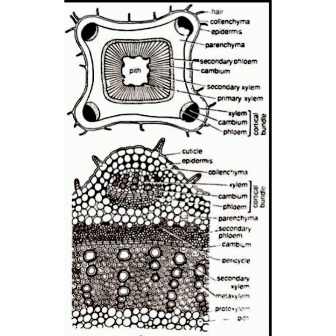The first one is the epidermis. It is a single layer consisting of rectangular cells. A thick, uninterrupted cuticle is present on the epidermis which protects it. Many multicellular hairs are also present, which are unbranched.